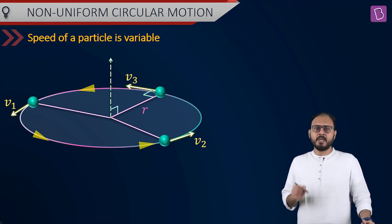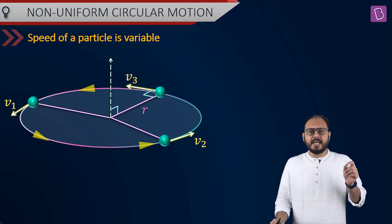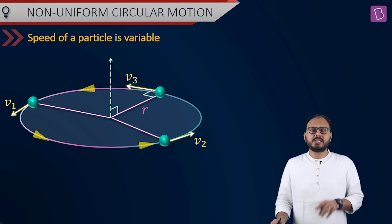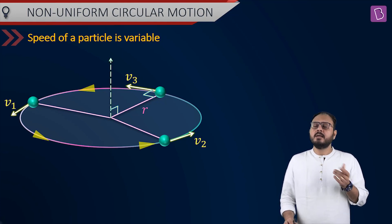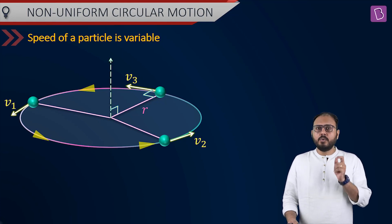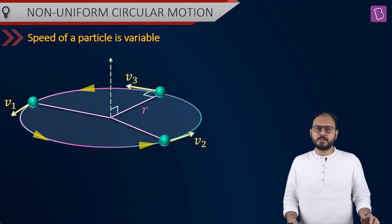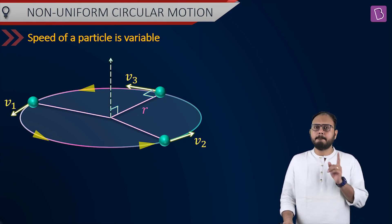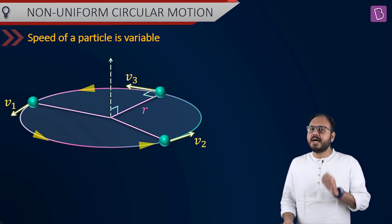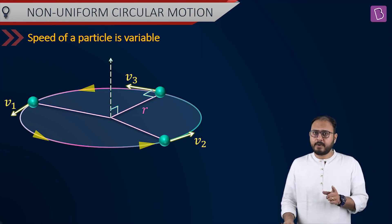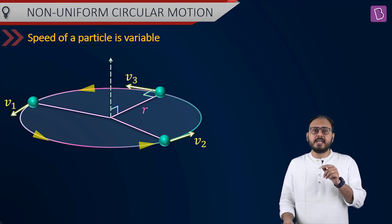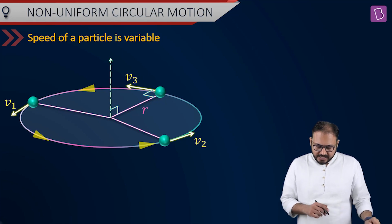In uniform circular motion, is it accelerated motion or uniform motion? It is accelerated motion. Why? Because speed remains constant but direction is changing constantly. In other words, velocity is changing. If velocity is changing, only one quantity can be responsible — acceleration. But if only direction is changing, that acceleration should be perpendicular to velocity — radially inwards. That's why the term centripetal acceleration was coined.